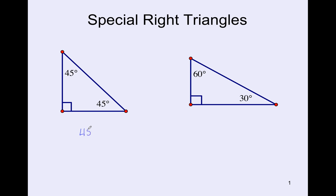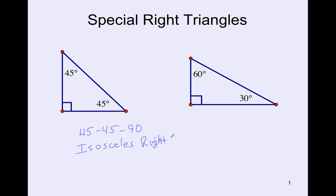The first one is known as a 45-45-90 right triangle — that's a reference to the size of the angles in there. It's also known as an isosceles right triangle, because in an isosceles triangle, two angles are equal to each other. So if a triangle has two equal angles, then two sides are also equal — the sides opposite those angles are the ones that are equal.